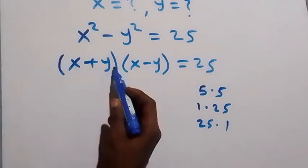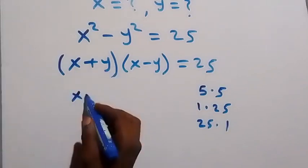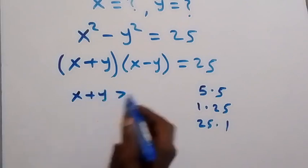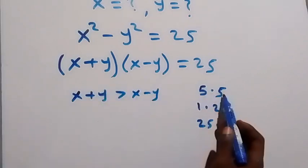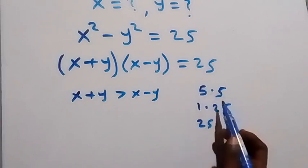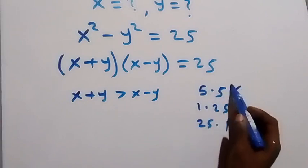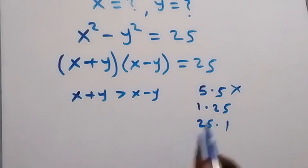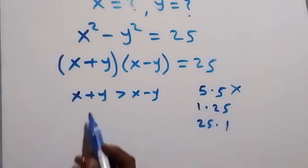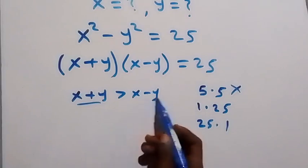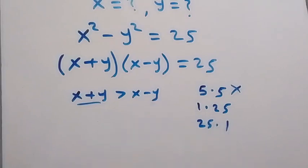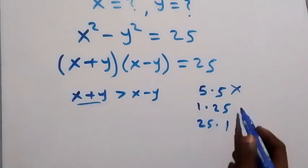Now when we look at it, we say this bracket of course is greater than this bracket. x plus y will be greater than x minus y. Now if we look at this 5, 5 here, they are not greater than each other, so this will not work on this side. This 1, 25 - the first one here cannot be 1 and the second one will be 25. So you see that this will be lesser. So therefore we won't take this one.